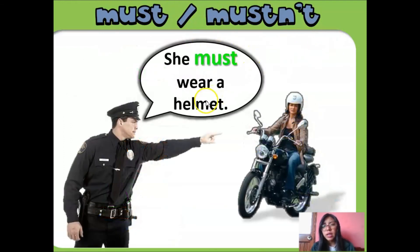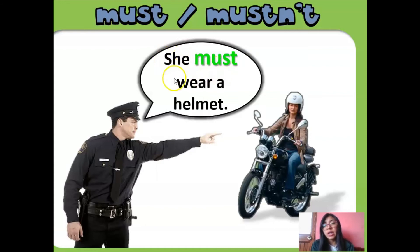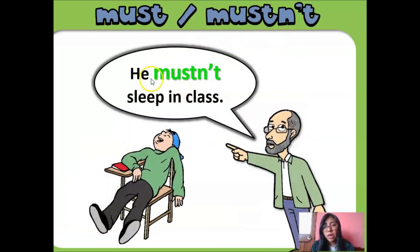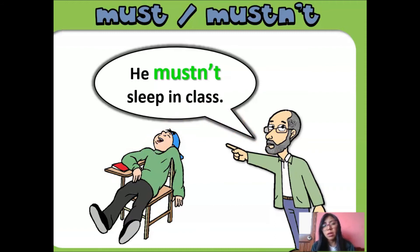She must wear a helmet. That thing is a helmet. The police says she must wear a helmet — that is an obligation. Same structure: subject, must, verb in base form, complement. In this case, he mustn't sleep in class — I am using the negative form because that is a prohibition. The teacher says he mustn't sleep in class — you cannot do that, you mustn't sleep in class.